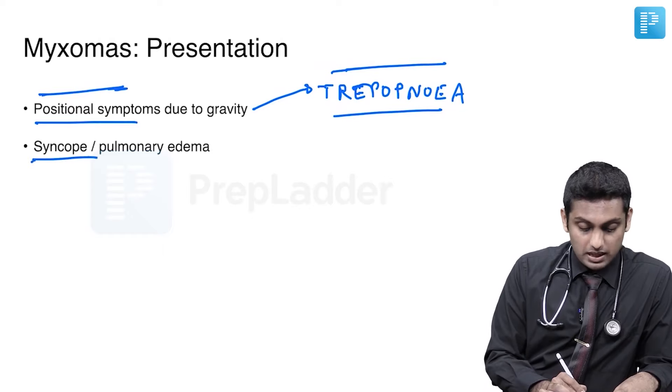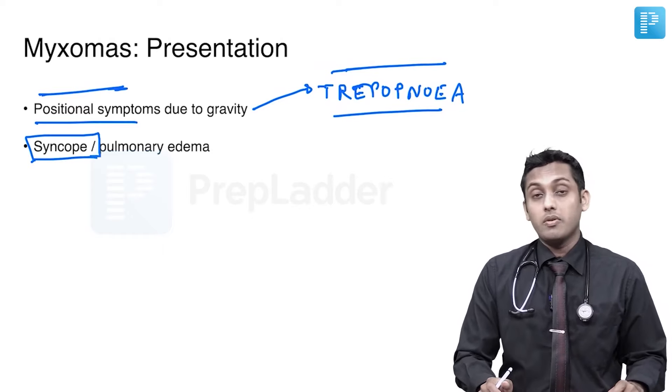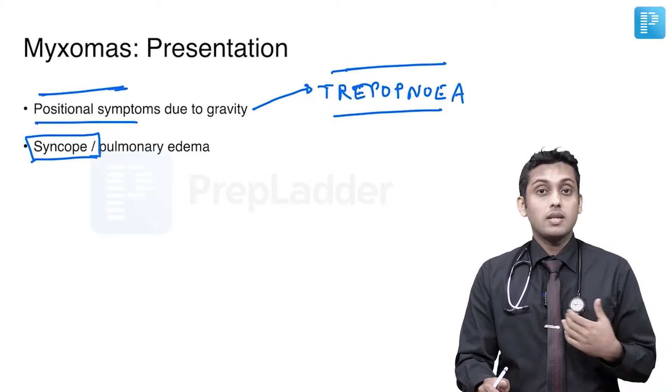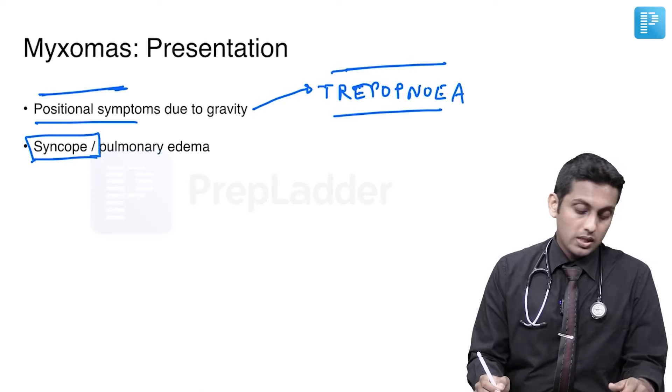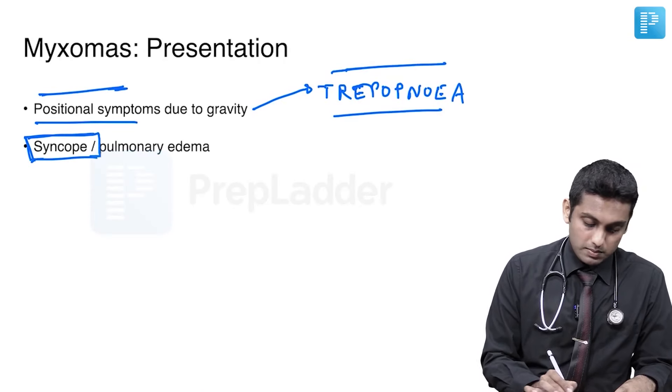Syncope, if the patient manifests with syncope, it means the myxoma is probably already large and decreasing cardiac output. Or it could mean the patient has had a transient ischemic attack, stroke, or that there is emboli already dispersed with a chance of recurrent emboli. So syncope is a dangerous warning sign when the patient has myxoma.